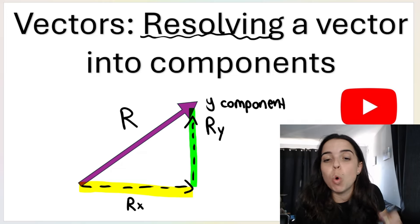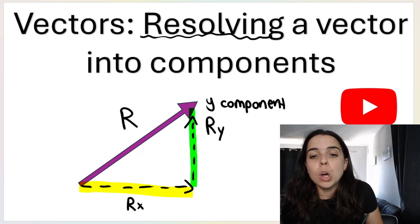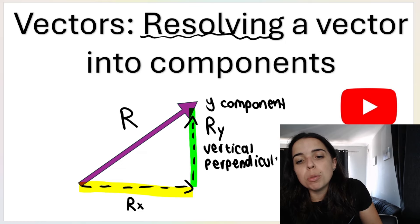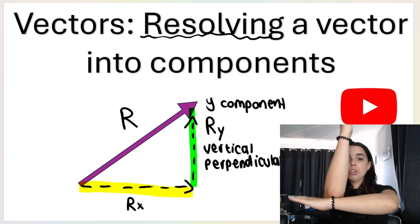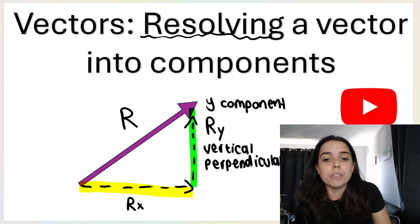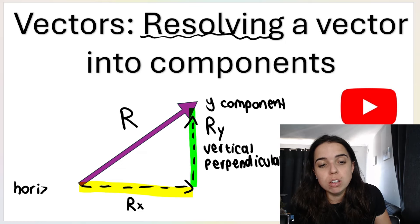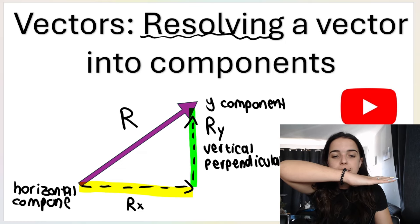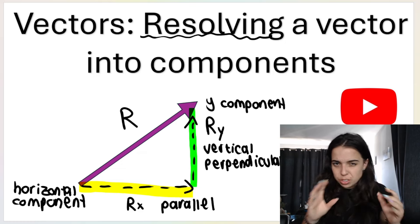Alternative names for these components that you may see in textbooks or study guides: r_y can be referred to as the vertical component or the perpendicular component — perpendicular because y is perpendicular to the ground, so it's always relative to the surface. r_x can be called the x-component, the horizontal component — because the horizon is flat — or the parallel component. Those are the different names used.